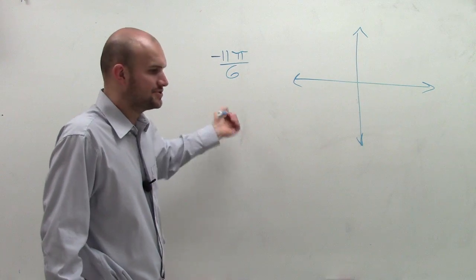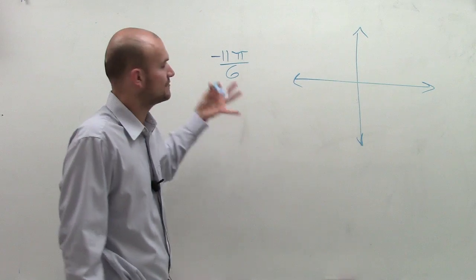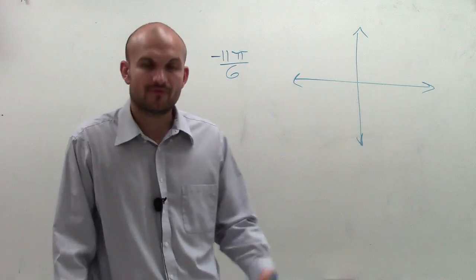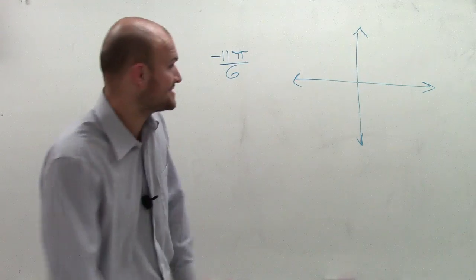So I want to make a great video that will help you out. I want to graph two coterminal angles, one that's going to be positive, one that's going to be negative, for our angle 11 pi over 6. So before I even get to that, I got to make sure I know where 11 pi over 6 is.